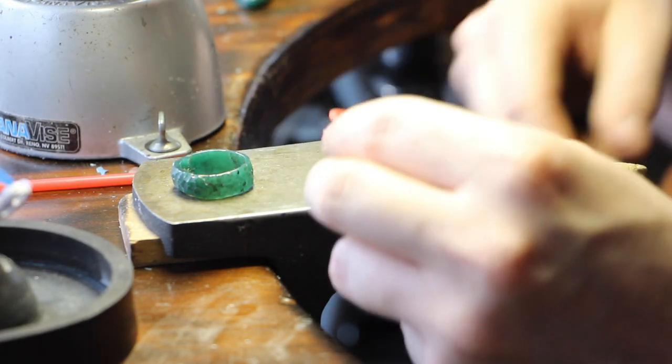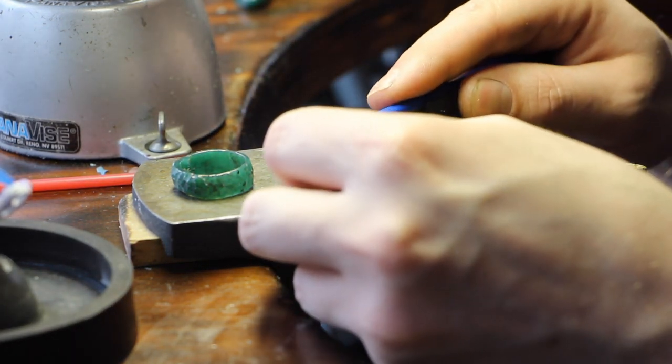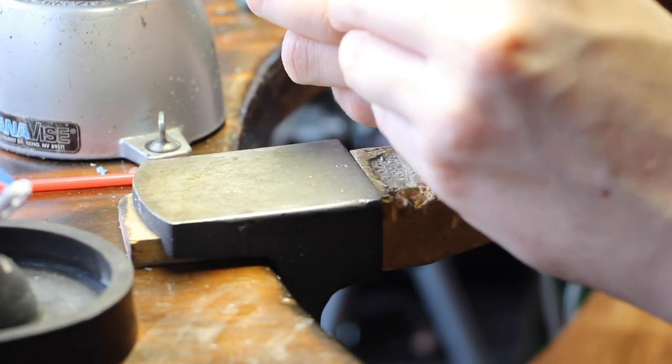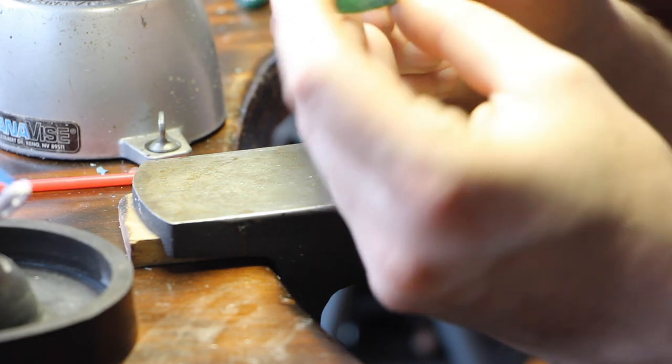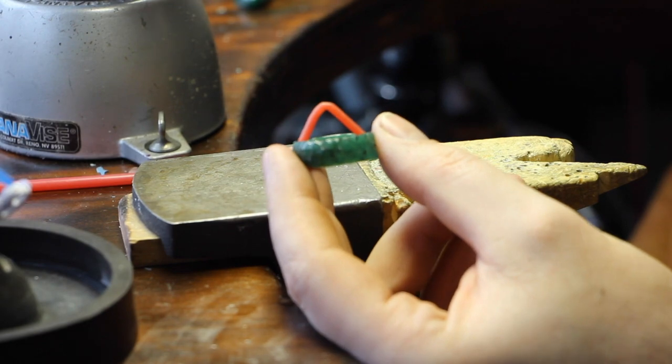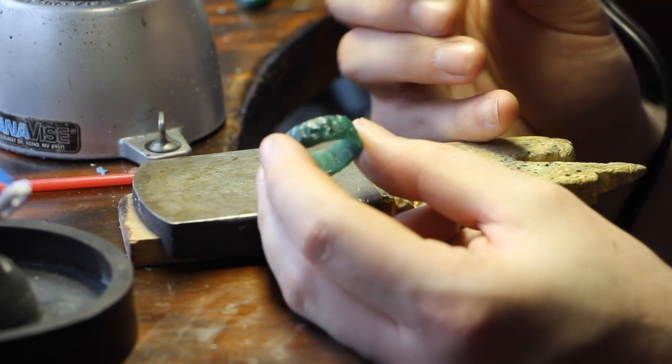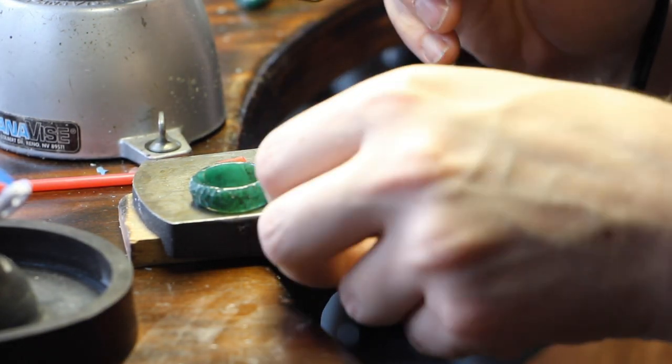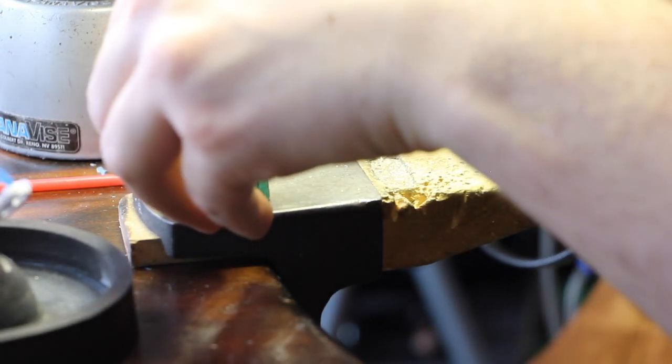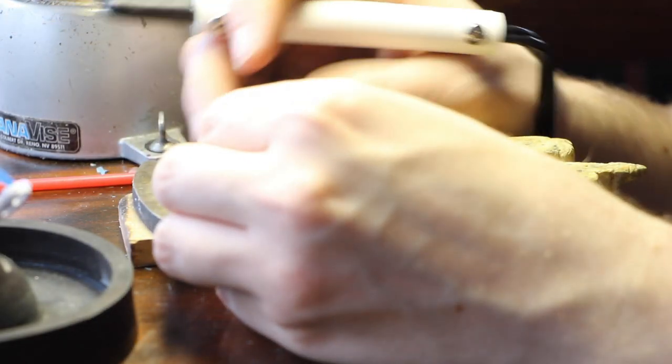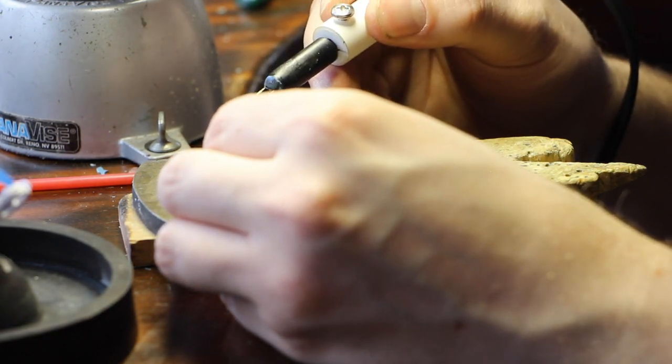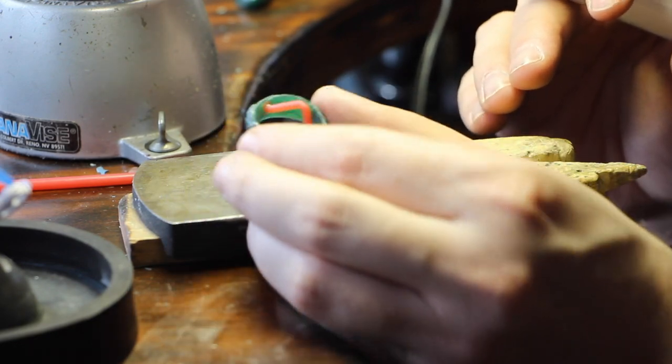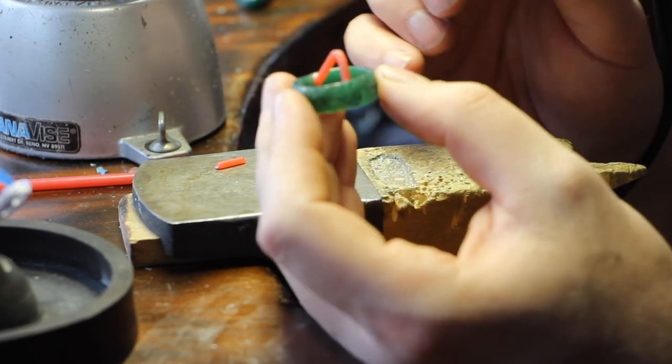I'm going to bend this into a shallow V, trim off some of the excess here, and fit that, just pressure fit, in there like this. Then I'm going to use my wax pen over here out of shot, and I'm going to pick up a little bit of wax from this cutoff. Starting something is always the hardest. I'm going to put a little drop in there. I'm going to hold on to it until it cools off. This wax cools off very quickly.